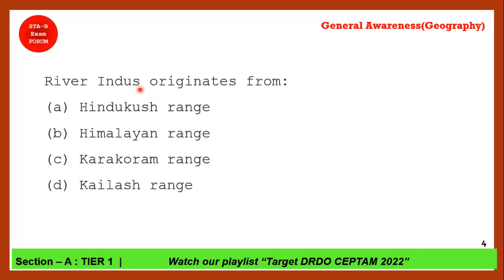The first question: River Indus originates from which mountain range? Indus river is also known as Sindhu river. The correct answer is Kailash range. Indus river originates from Kailash range, specifically from Bokarchu glacier, which is near Mansarovar lake.